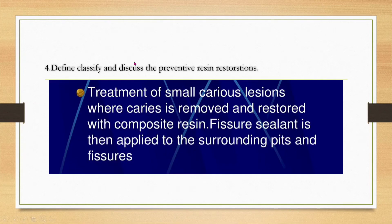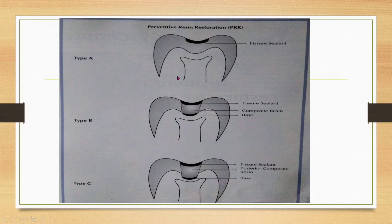Now let's learn about Preventive Resin Restoration (PRR). It is a restoration done with resin on a preventive mode. There are three types of cavities: Type A, Type B, and Type C, depending on depth. In Type A, the cavity is very minimal; Type B is a little deeper; Type C is more deep.